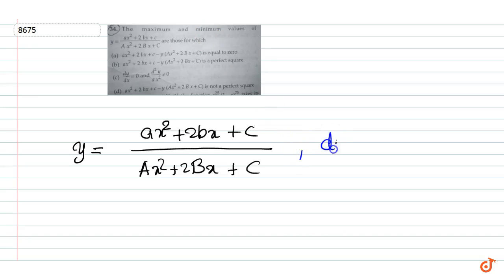Here we have y is equal to ax square plus 2bx plus c upon capital Ax square plus 2 capital Bx plus capital C. Now y is maximum or minimum when dy by dx equal to 0.